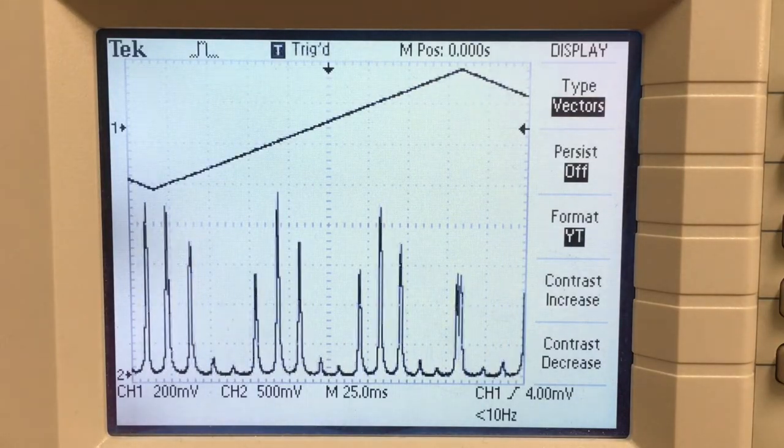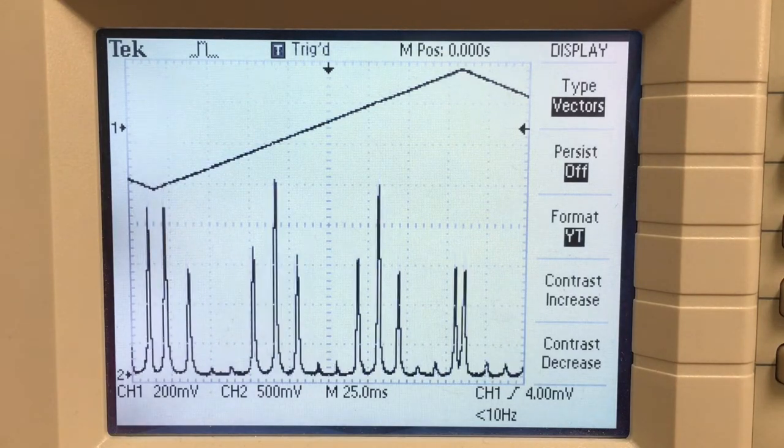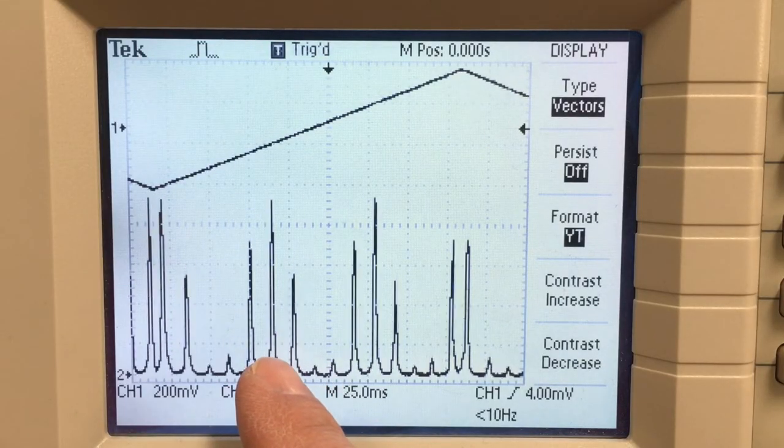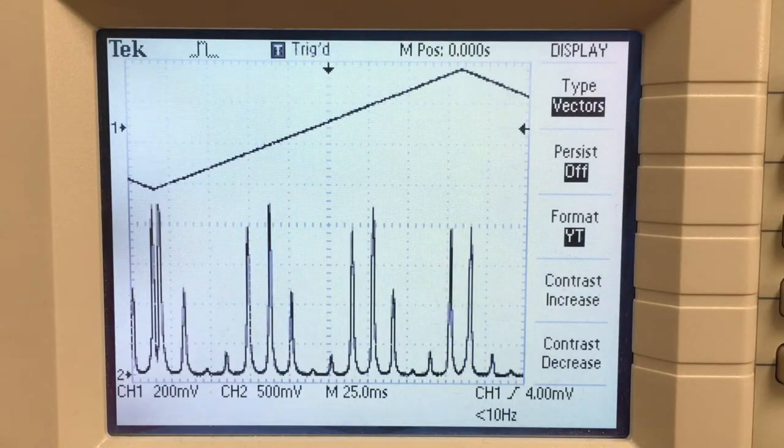So our resonance peaks are now nice and sharp and you see the pattern repeats. This represents the different resonances as the mirror scans along.